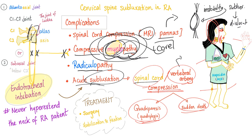During endotracheal intubation, never hyperextend the neck of a rheumatoid patient — never, ever — without first obtaining an X-ray to make sure there is no subluxation. What if there is an emergency and you have to intubate but the patient has atlantoaxial subluxation? You have two options: A — secure the head and don't move it while you intubate.